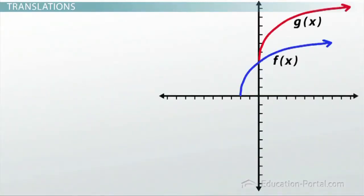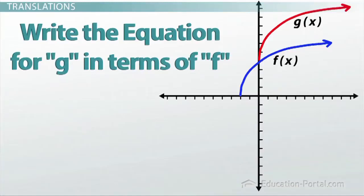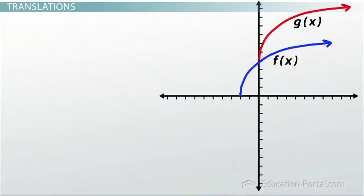One last example. The function g here is a translation of the function f. Write the equation for g in terms of f. Yikes, this one has pretty crazy directions. Well, let's not worry about that too much and focus on what we've learned.